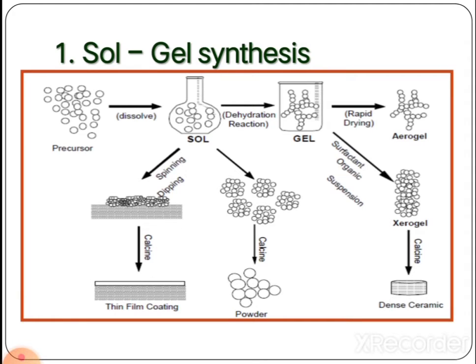Starting from the sol: the sol is spun or deposited on a solid substrate by dipping or coating the substrate, and on calcination a thin coating on the substrate is formed. Alternatively, the sol is dehydrated to form a powder in the form of clusters, which on calcination at very high temperature yields a finely powdered nanoparticle structure.